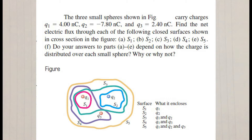Parts A through E ask for the flux through surfaces S1, S2, S3, S4, and S5 respectively. Part F asks: do your answers to parts A through E depend on how the charge is distributed over each small sphere? Why or why not?